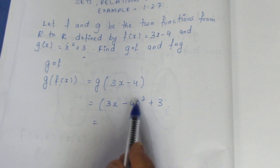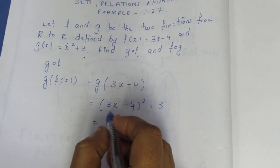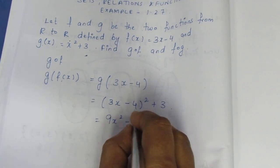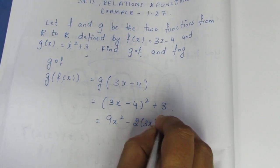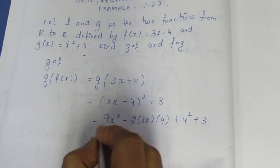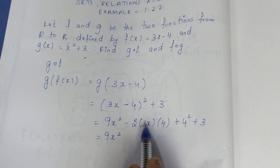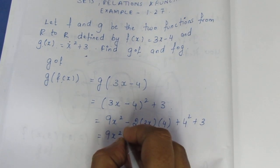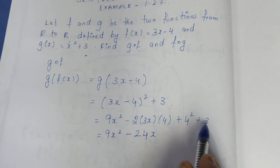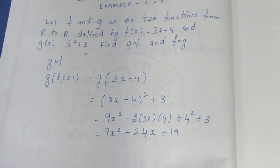Using the a minus b whole square formula: a square minus 2ab plus b square. We get 9x square minus 2 into 3x into 4 plus 4 square, which gives 9x square minus 24x plus 16 plus 3, equal to 9x square minus 24x plus 19.